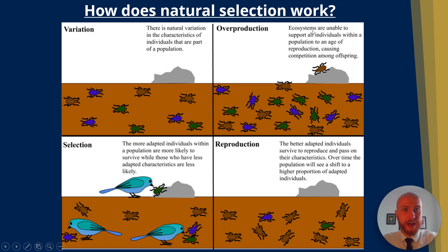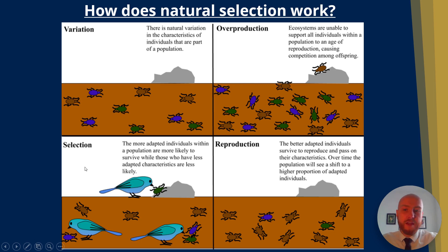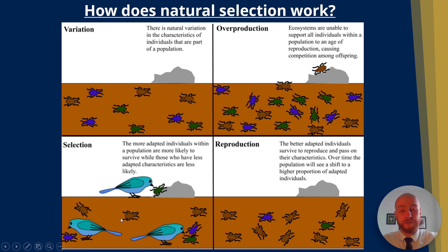The next step is overproduction. Ecosystems are unable to support all individuals within a population towards an age of reproduction, which means there's competition for resources. Then we have selection, where the more well-adapted individuals are more likely to survive.